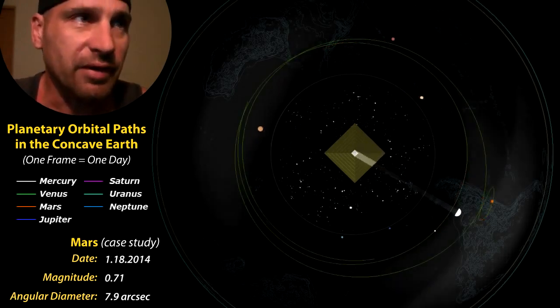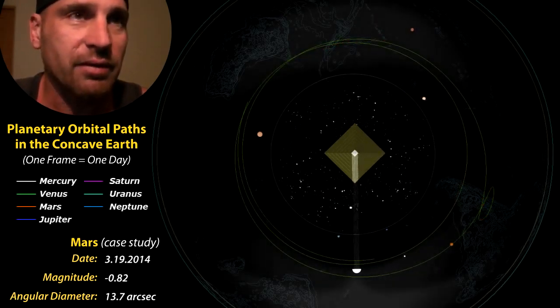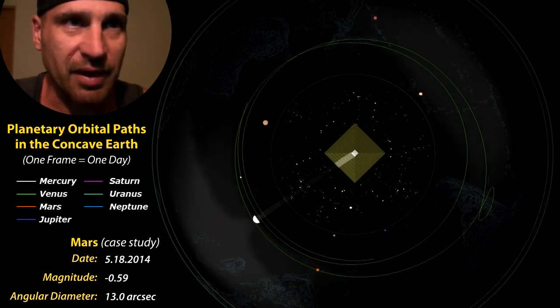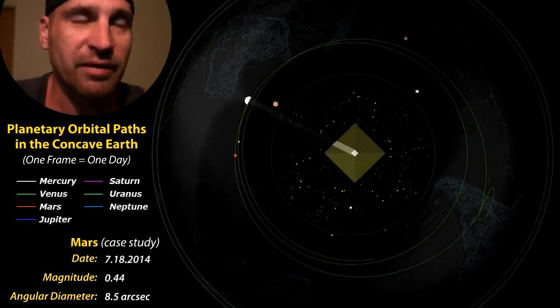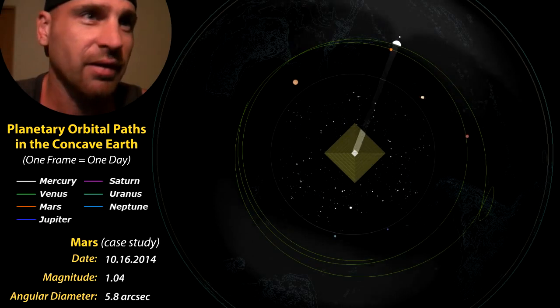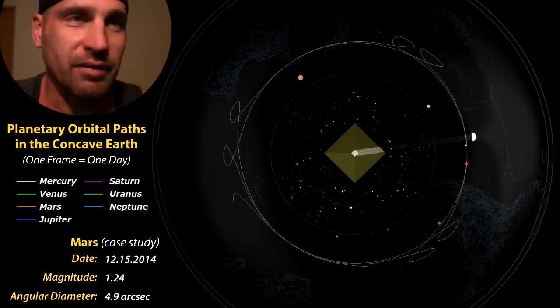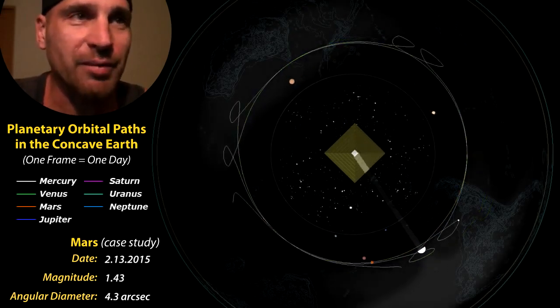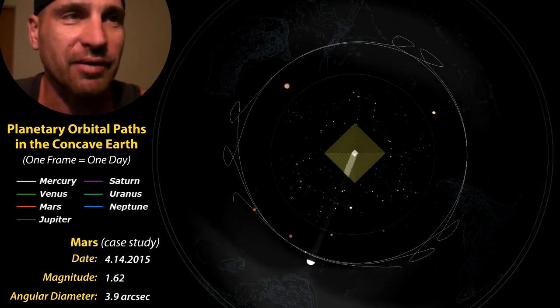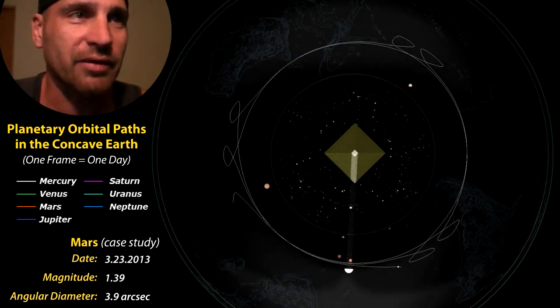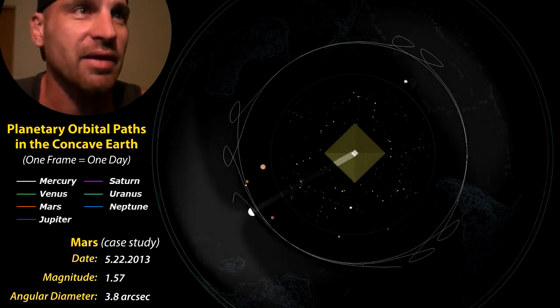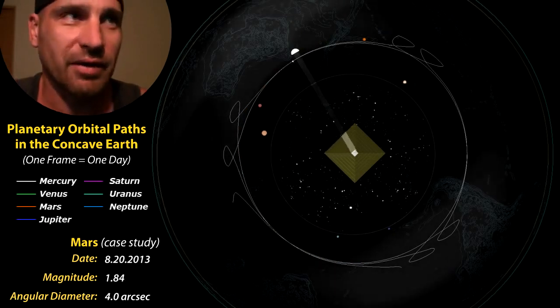And then you have Venus. Venus is that green path. It's doing a retrograde there in the bottom right. For about six weeks out of the year, it's going to do a retrograde like that. Then you have that white line is Mercury. Mercury zips around, kind of like a fly around a horse. It just zips around the Sun like that. It does a retrograde three times a year.